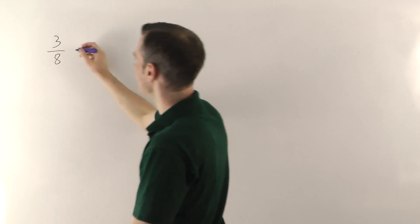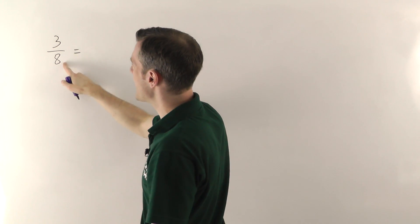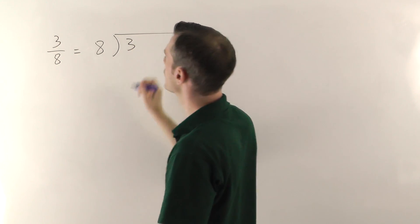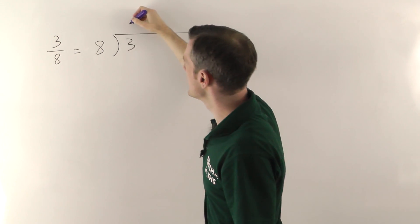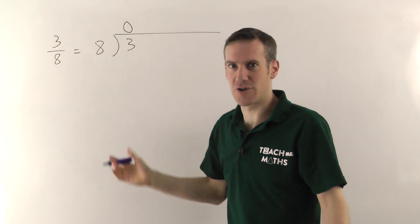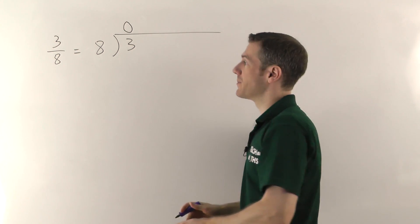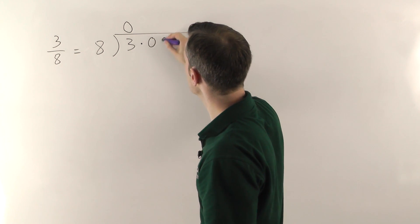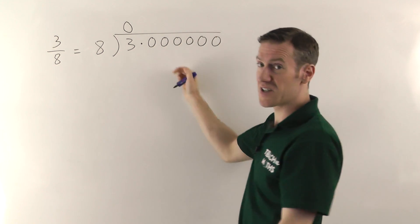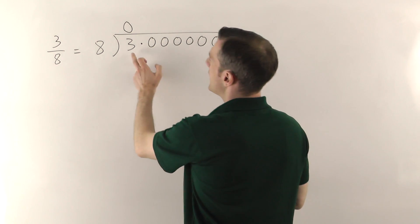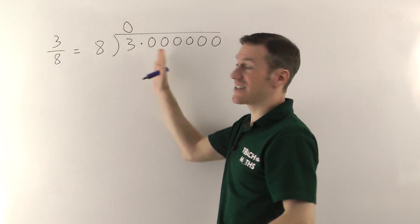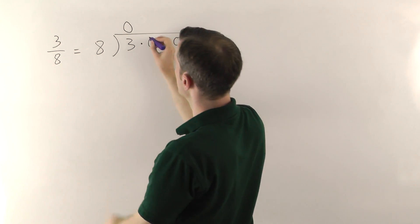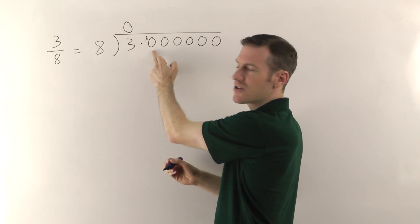Let me show you how. This is just normal division — we want to know how many eights go into 3. How many eights in 3? It goes 0 times. There's just a little trick here you have to remember: 3 could be written as 3.000000 — as many zeros as you like really. And now I've got the digits to do my remainders and actually do the division. So you say, how many eights go into 3? That goes 0, remainder 3. Or you can just read it as 30 — it's fine either way.